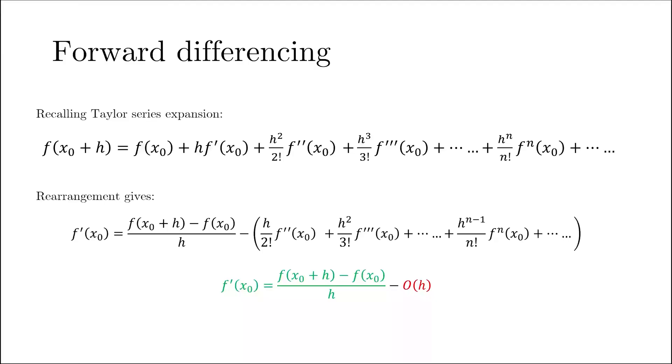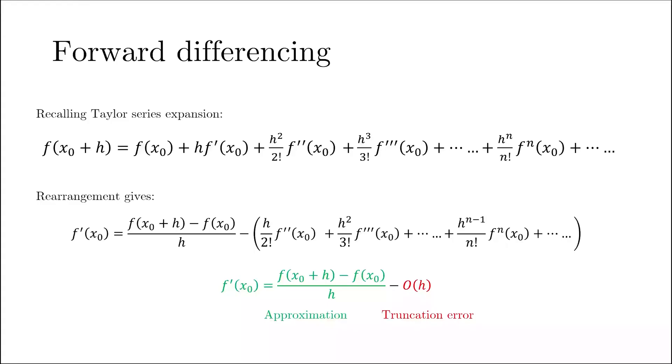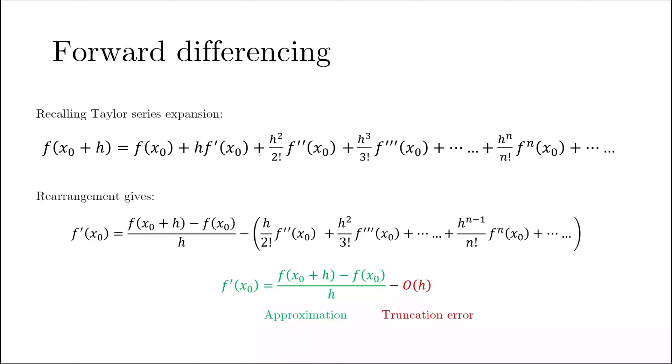In order to write all the bracketed terms in a more compact fashion, we write them as order of h. When I say order, I roughly mean they are about the same size as h — if I change h by 10%, those bracketed terms would also change by roughly 10%. This final equation is the first order estimate using the forward differencing method, where the green part is the approximated value and the red part is the truncation error. We have truncated the series, and the leading term in the truncation error is of the order of h.